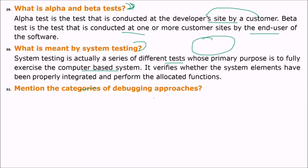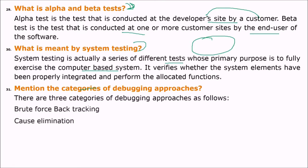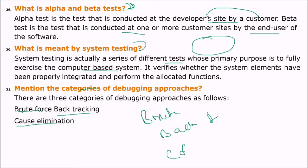Mention the categories of debugging approaches. There are three categories: brute force, backtracking, and cause elimination.